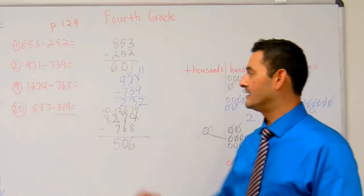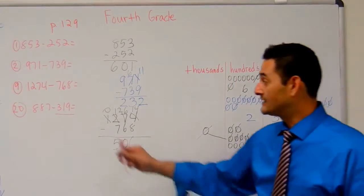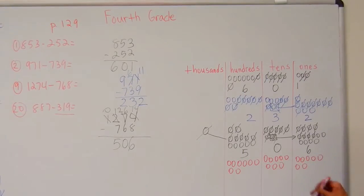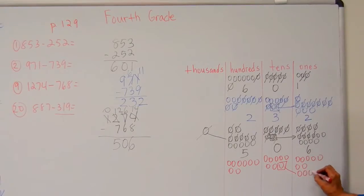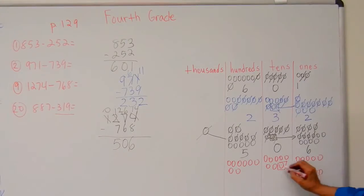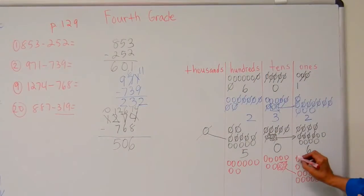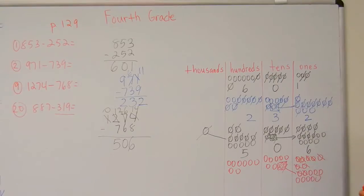Now let's subtract. Start with the ones place — I've got nine to take away. I don't have enough with seven. I need to borrow from this ten. Let's move ten over here — one through ten. Get rid of that ten. So now I take away nine — one through nine. How many do I have left in the ones column? I've got eight.